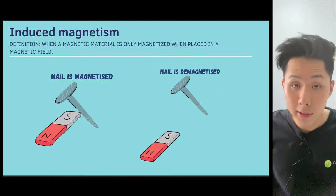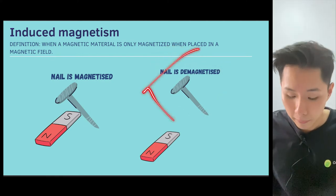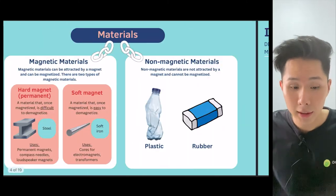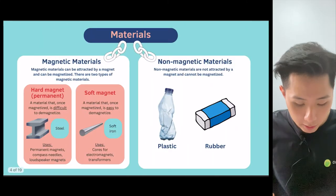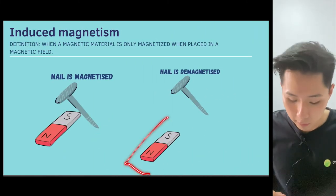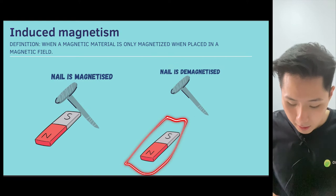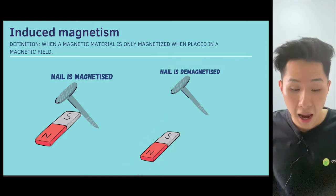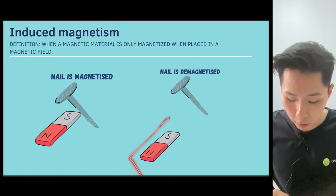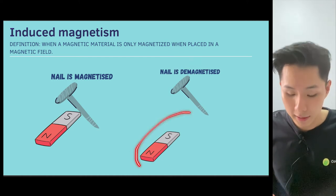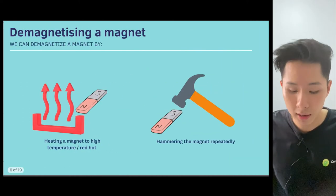What can you say about this nail? This is a soft magnet — or in other words, a soft magnetic material. Whereas this magnet here, even if the nail is removed, it will still remain magnetized. Then this magnet is a hard magnet.